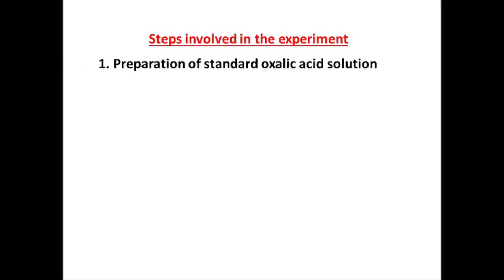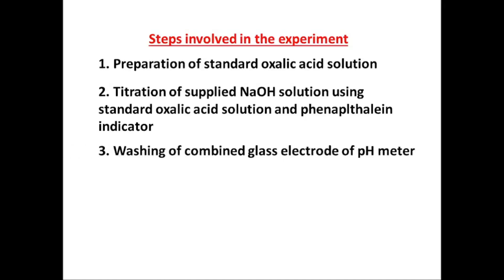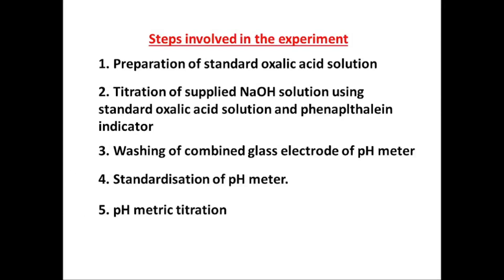The steps involved in this experiment are: preparation of standard oxalic acid solution; titration of supplied sodium hydroxide solution using standard oxalic acid solution with phenolphthalein as indicator to determine the strength of NaOH; washing the combined glass electrode of the pH meter; standardizing the pH meter; pH metric titration; and finally drop calibration. Note that preparation of standard oxalic acid solution and standardization of the pH meter are not discussed in this video to keep it concise.